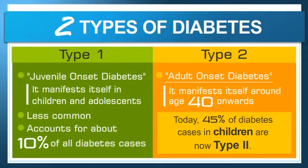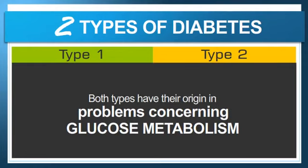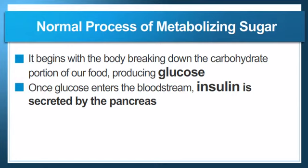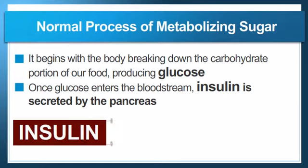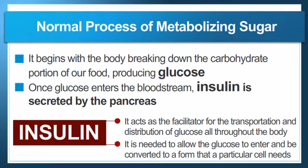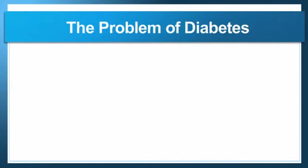Both types of diabetes have their origin in problems concerning glucose metabolism. The normal process begins with the body breaking down carbohydrates present in our food, which produces glucose — energy necessary for our body. However, that's when things get complicated in the diabetes situation. Once glucose enters the bloodstream, insulin is secreted by the pancreas, acting as a facilitator to help transport and distribute glucose throughout the body. Insulin is essential because its presence is needed to allow glucose to enter different cells and be converted to whatever form that particular cell needs.